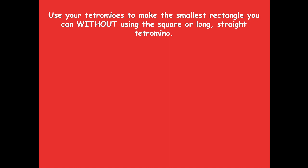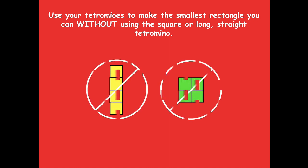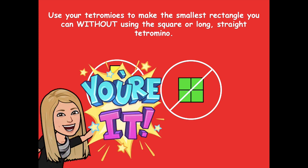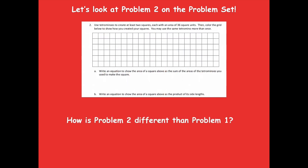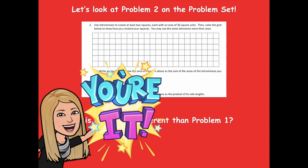Now use your tetrominoes to make the smallest rectangle you can without using the square or the long straight tetromino. You can't use those two — use any of the other shapes. Pause the video and give it a try. So how did you make your rectangle? Keep in mind your rectangle might look different than mine. Let's look at problem two on the problem set. How is problem two different than problem one? Pause the video, look closely at problem two, then click play when you're ready.